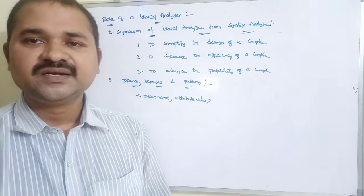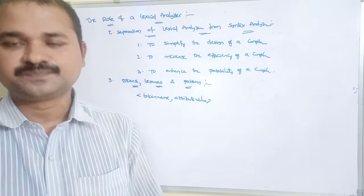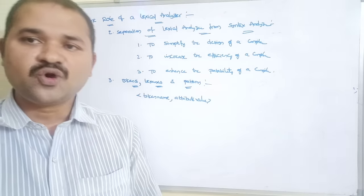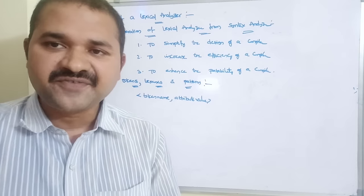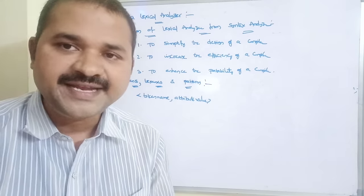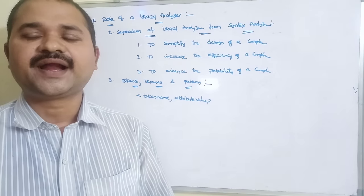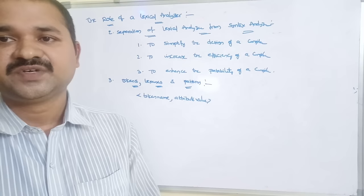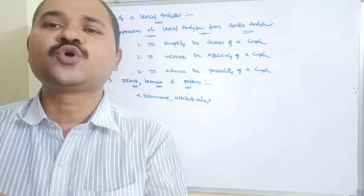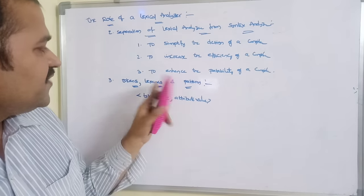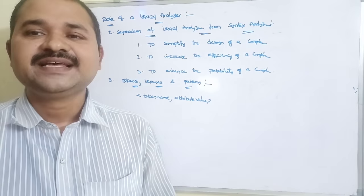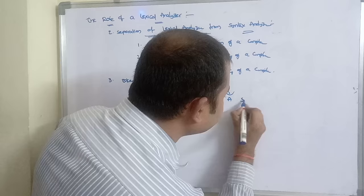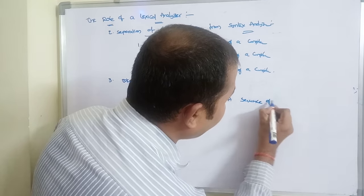A token can be defined as a pair with two components — token name and attribute value — where the token name may be an identifier, operator, constant, or keyword, and the attribute value is an entry pointing to the symbol table. A lexeme is defined as a sequence of characters.